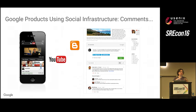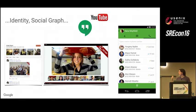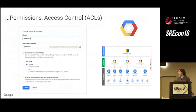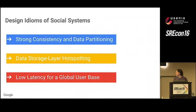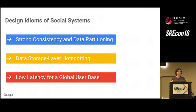We built this infrastructure and it's showing up in different places you may not be aware of. The commenting system we built is used in YouTube and is one of the options for Blogger. The identity and social graph components are core parts of YouTube and Hangouts. And the permissions and access control systems we built for Google Plus form one of the core underpinnings of the IAM access model for Google Cloud itself. Today I'll cover strong consistency and data partitioning, data storage layer hotspotting, and low latency for a global user base.